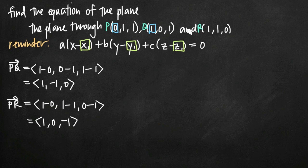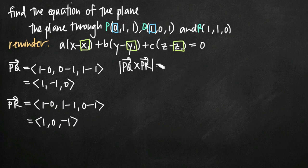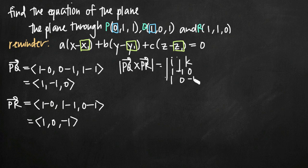We started with three coordinate points in the plane and now have two vectors lying in the plane. We take the cross product of PQ and PR to get the normal vector. We set up a 3×3 matrix: the first row is i, j, k; the second row is vector PQ: 1, -1, 0; and the third row is vector PR: 1, 0, -1.